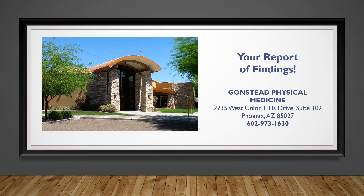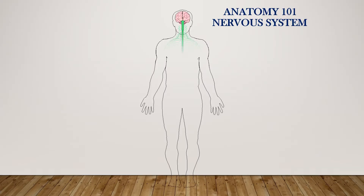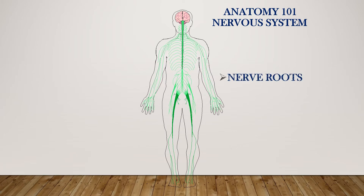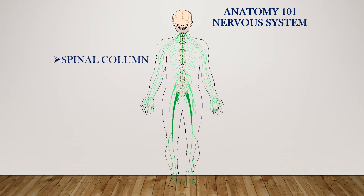Let's start with a review of the anatomy of the nervous system. We know the brain is the master controller of all functions of the body. The brain sends electrical impulses down through the spinal cord. Branching off the spinal cord at each level are nerve roots, which continue branching out, going to all parts of the body. The brain is protected by a hard outer casing called the skull, and the spinal cord is protected by the spinal column.